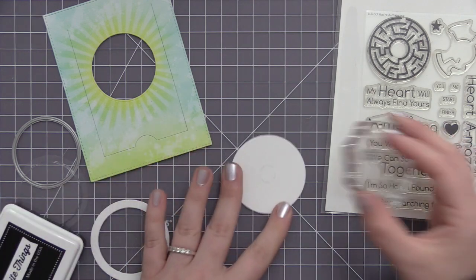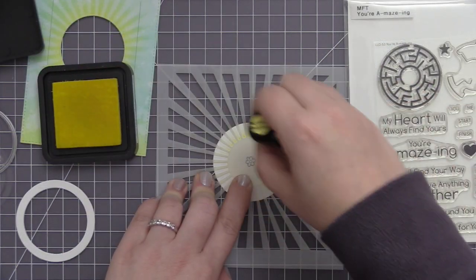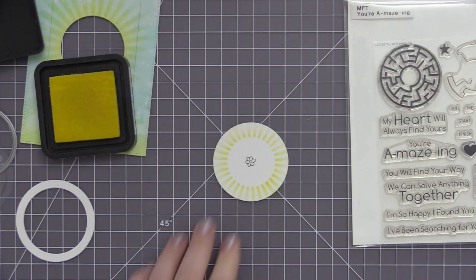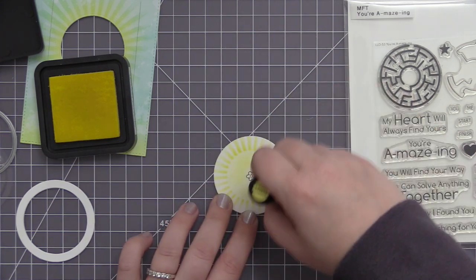Because we're going to remove this from the card and have it as its own standalone game, I want to make sure that the maze has its own backer piece. I don't want to use any parts of the card to be the back of the maze. I want it to have its own little area, so that's what I'm doing here with this circle that I've cut out.